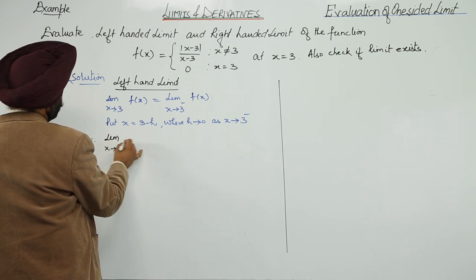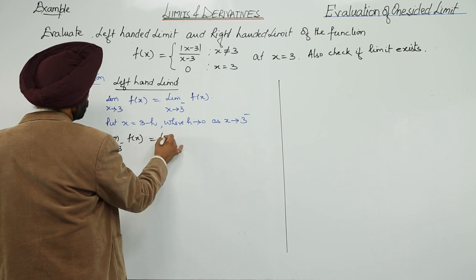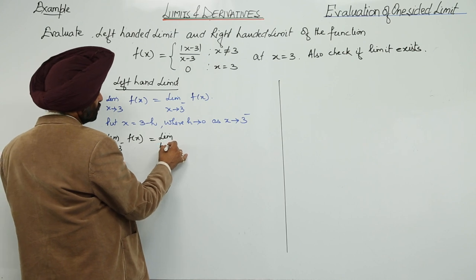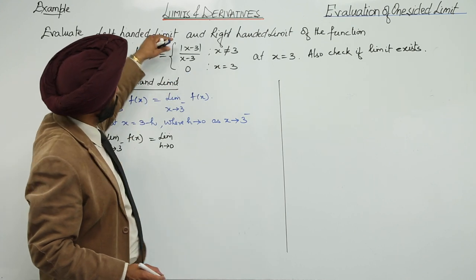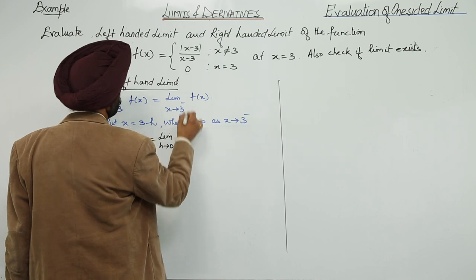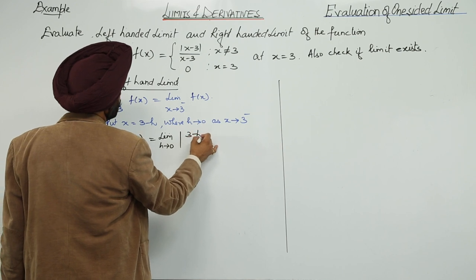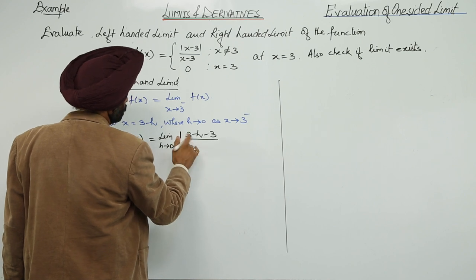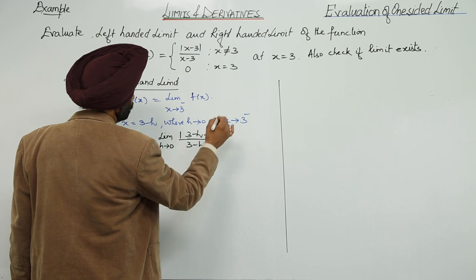Limit as x approaches 3 from the left of f(x). Since x is not equal to 3, we select the upper part. In place of x we put 3 minus h, so we get the modulus of (3 minus h minus 3), upon (3 minus h minus 3).